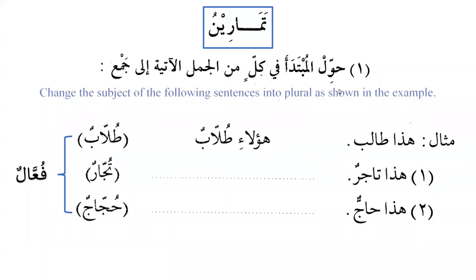The word حول means 'to change' and this is فعل الأمر (imperative). The exercise says: حول المبتدأ في كل من الجمل الآتي إلى الجمع — change the subject of the following sentences into plural, as shown in the example.